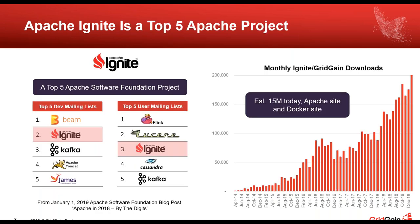We're a top-five Apache product. Everything I'm talking about here is open source and freely downloadable. We're one of the top five both according to the developers mailing list and the user mailing list — up there with the likes of Kafka and Cassandra. Today we're estimating that in aggregate about 15 million downloads have occurred from the Apache site and the Docker site, so it's a very large and thriving community.